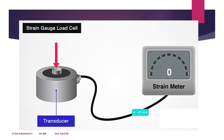The elastic deformation varies the resistance. The resistance change produces a current — like a 4 to 20 mA current — which is generated and measured using a meter such as a strain meter. The force input produces an output signal, which we can read and scale to determine the load.